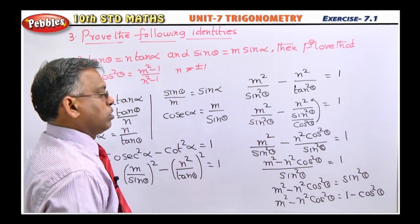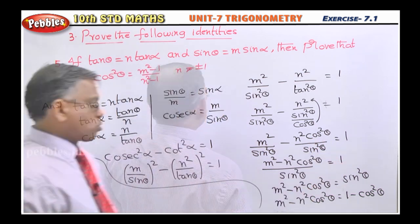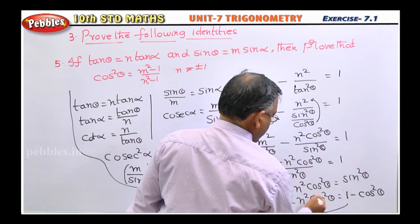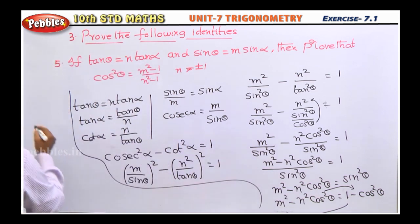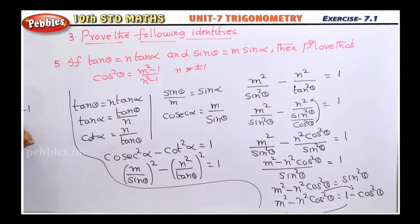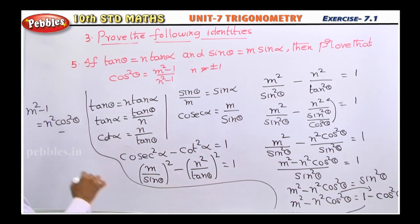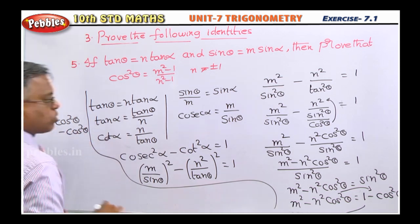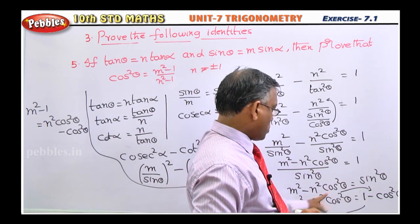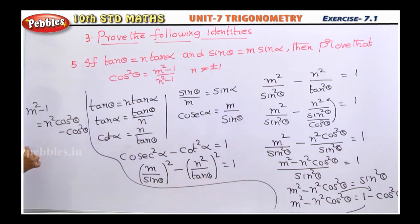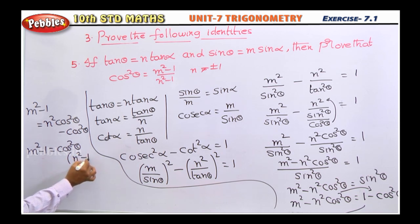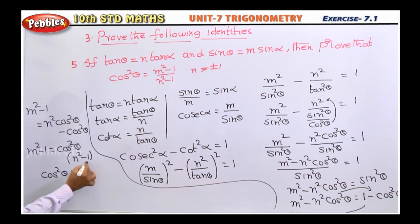Now bring all cos²θ terms to one side and constants to the other. Bringing the cos²θ from the right to the left gives m² minus n²cos²θ plus cos²θ, and bringing the 1 to the left gives m² minus 1 = n²cos²θ minus cos²θ. Taking cos²θ as common factor: m² minus 1 equals cos²θ times (n² minus 1). Therefore cos²θ equals (m²-1)/(n²-1), which is the required answer.